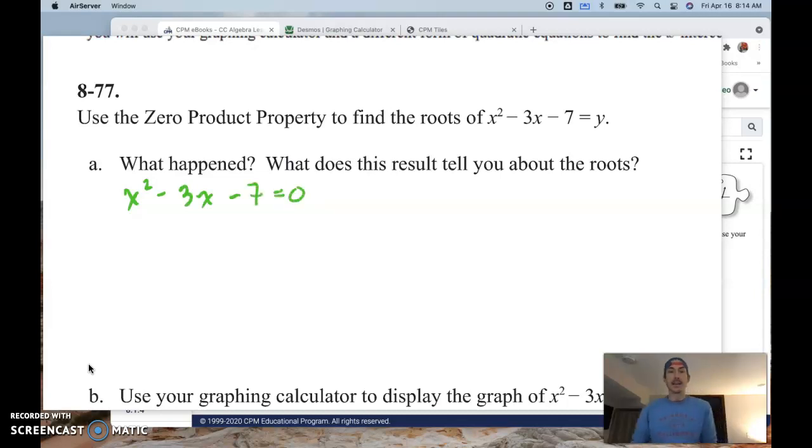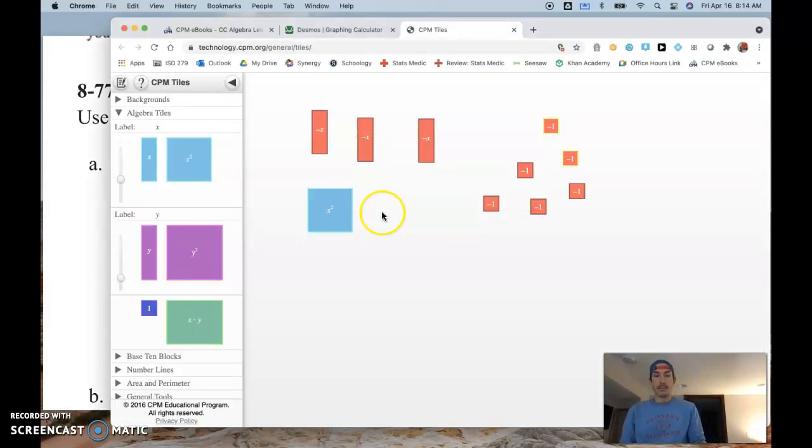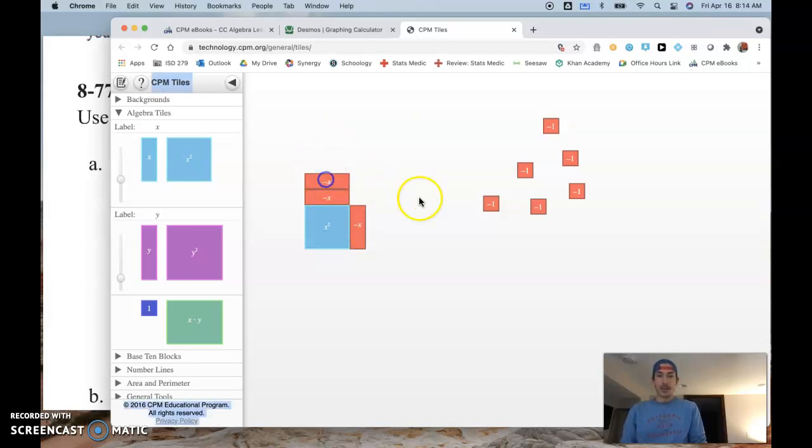And just to give you an idea here, I've taken this and I've set it up ahead of time using our CPM e-tiles, and I've got an x squared, I've got negative 3x, and I've got negative 7 here. And remember, when we were learning how to factor, we were trying to build rectangles. I don't care how I arrange these. When we arrange these, we've got to build a rectangle with no gaps, with no overlaps, and we've got to use all the tiles. Now for sure I've got a rectangle with no gaps and no overlaps, but I don't have all the tiles used.